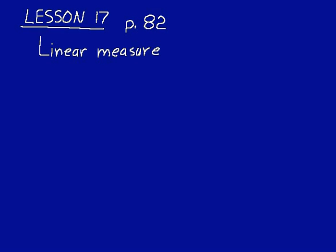Lesson 17 starts on page 82 and it's about linear measure or measuring length. The first thing I want you to do before we do anything else on this lesson is to memorize those two tables. The one at the bottom of page 82 and the one at the bottom of page 83. Those deal with measurements of length in the US system and in the metric system or the international system, also called the System International.